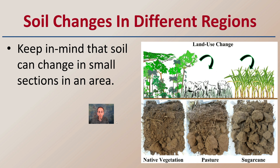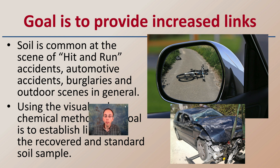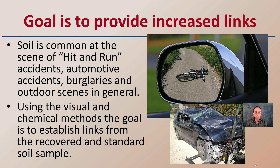Keep in mind that soil can change in small sections or in an area — this could be where there's plant material, certain plants growing, or what the land is used for. All these factors need to be taken into consideration, and soil samples should be taken as close as possible to the suspected area where they were picked up on tire tread or shoe. The goal of soil investigation is to provide increased links. Soil is very common in hit-and-run accidents, automotive accidents, burglaries, and outdoor scenes in general. Using visual and chemical methods, the goal is to establish links between recovered and standard soil samples, which are very important in forensic science.